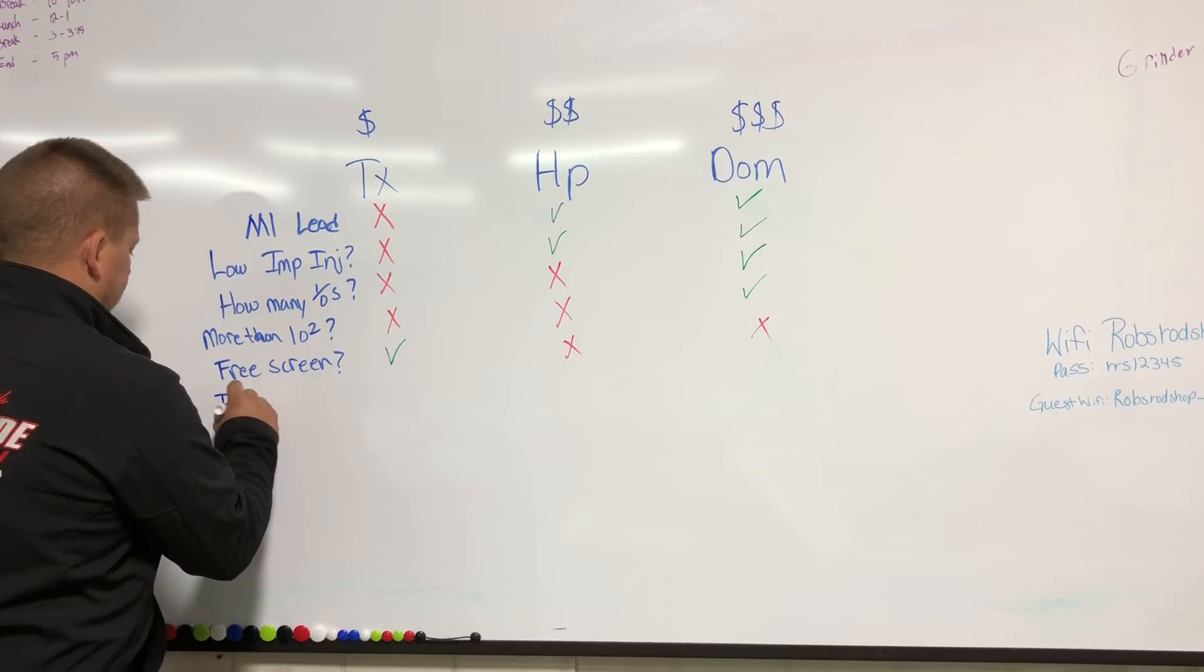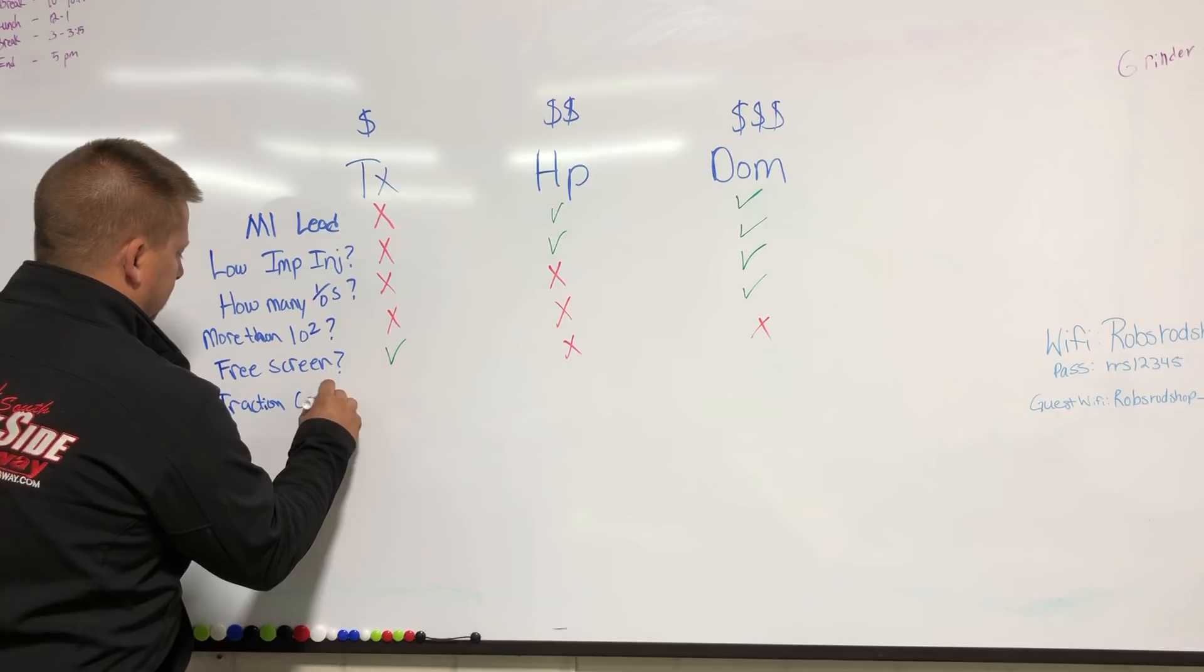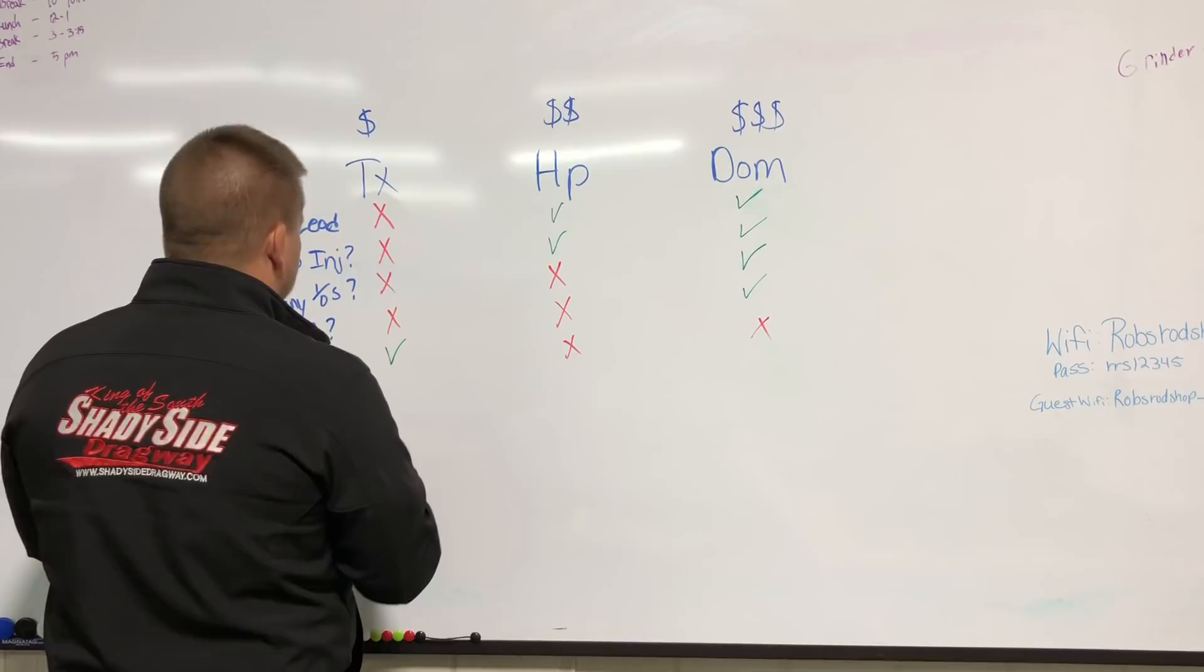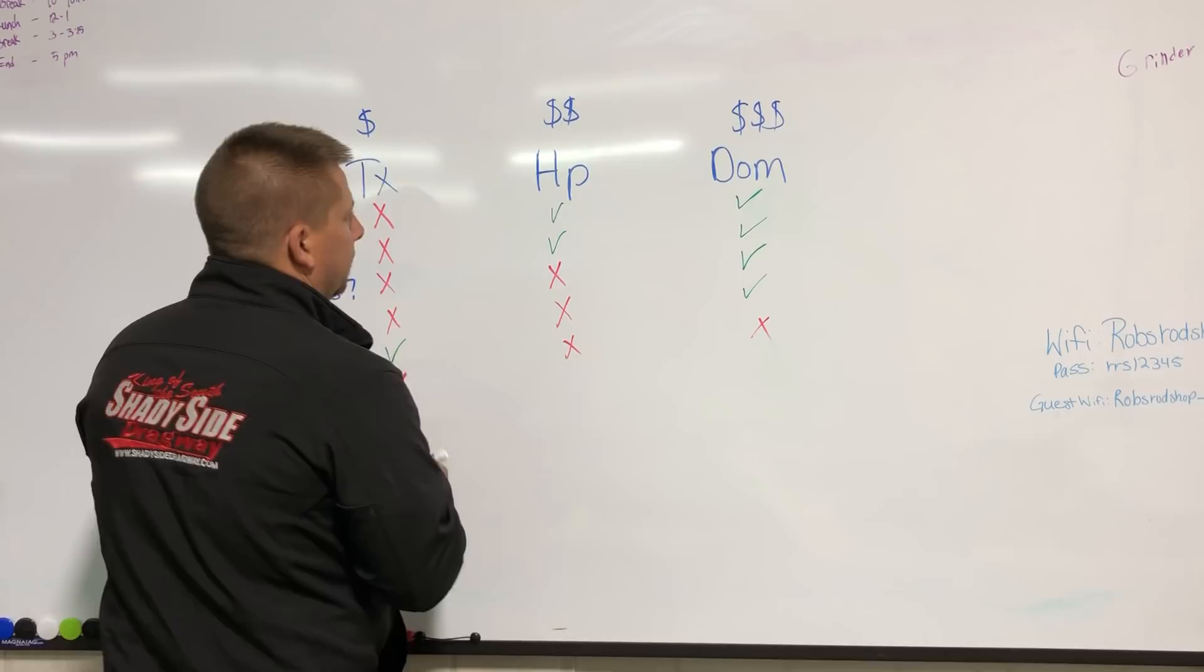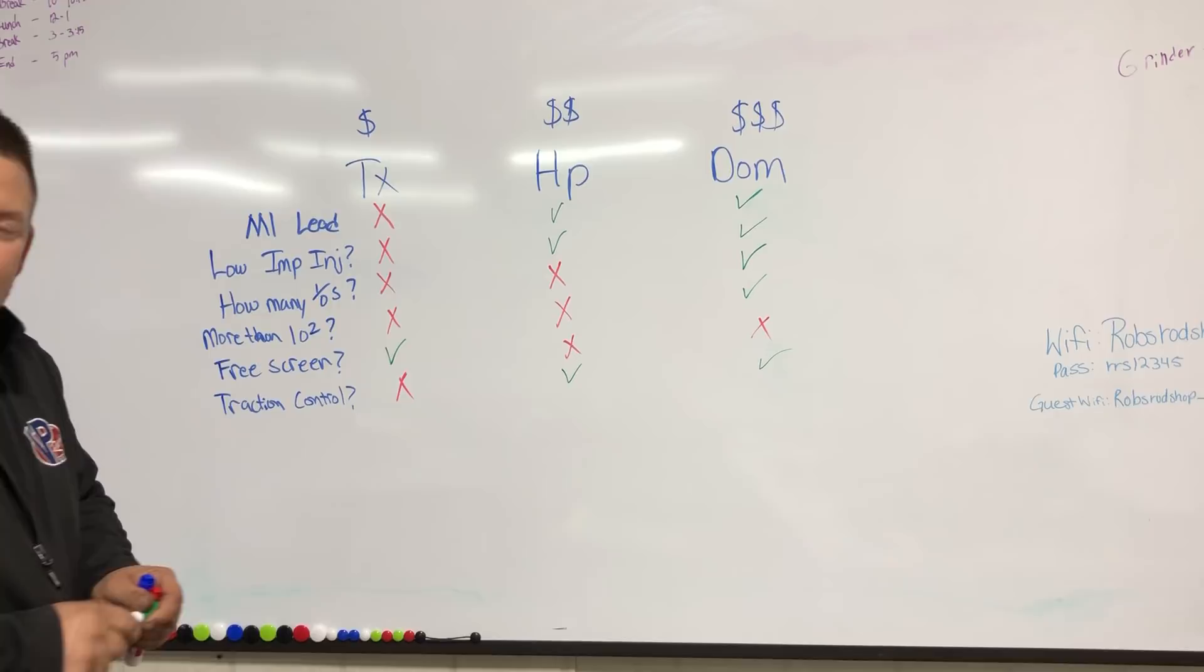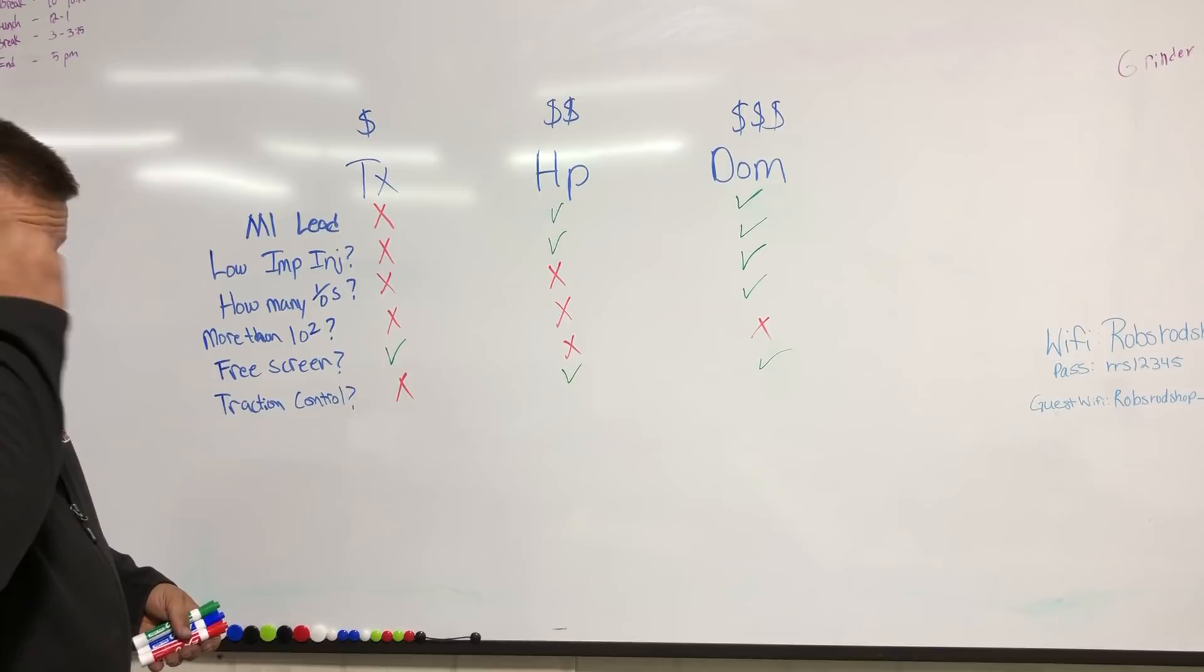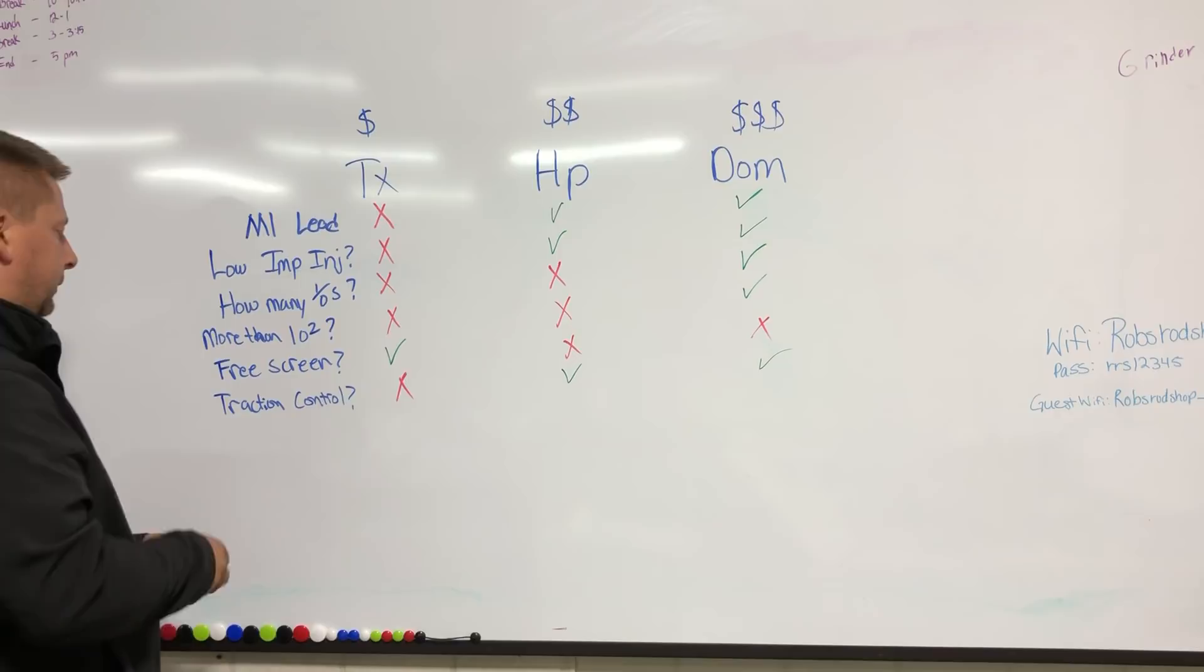Do you need traction control? If you do, Terminator X does not have it. However, HP and the Dominator both have the option to download it, upgrade the software to use it, and then add a drop shaft speed sensor in order for it to read and produce a map for you to go off of for your traction control.